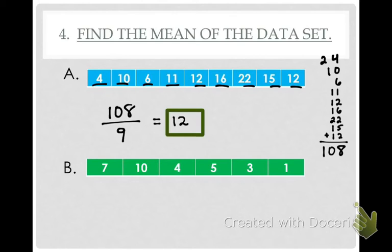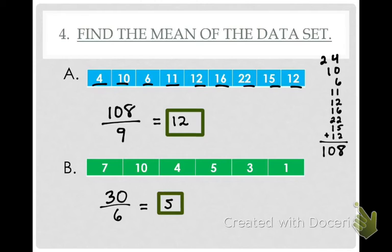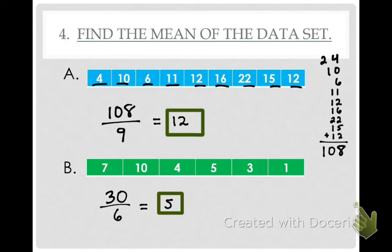When you added the green numbers together, what did you get? 30. Divide by how many numbers are in that data set? Six. So what's the average? Five. Five is correct. Does that come in between the smallest number, 1, and the biggest number, 10? Yes — that's a good sign.